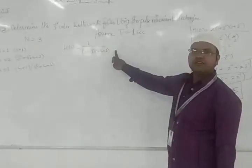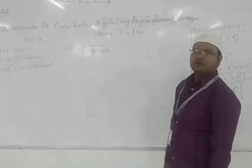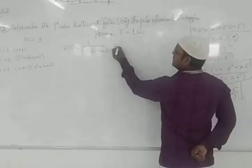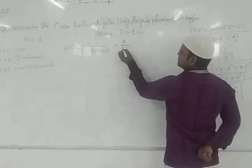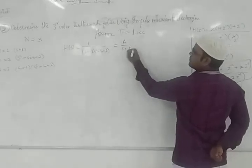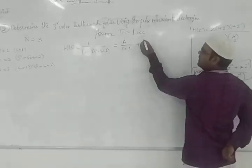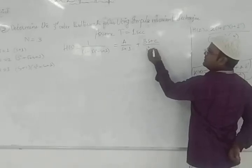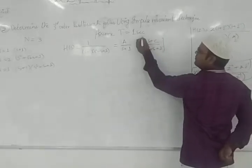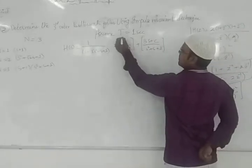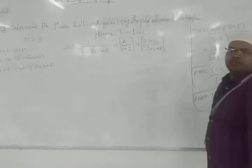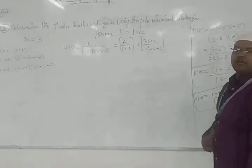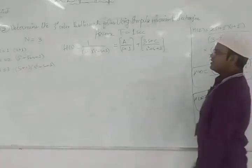The first step for the impulse invariant method is to get H(s) and then take the partial fraction expansion. We write: H(s) = A/(s+1) + (Bs+C)/(s²+s+1). We now simplify to find the values of A, B, and C.